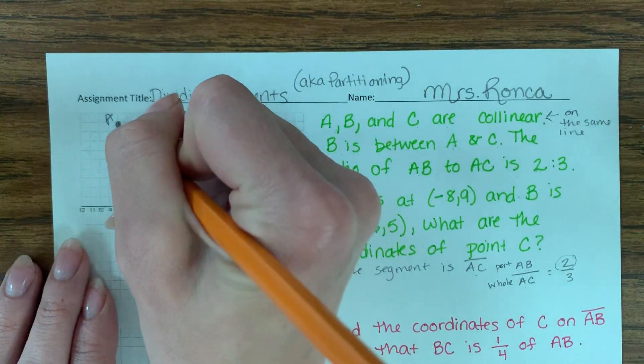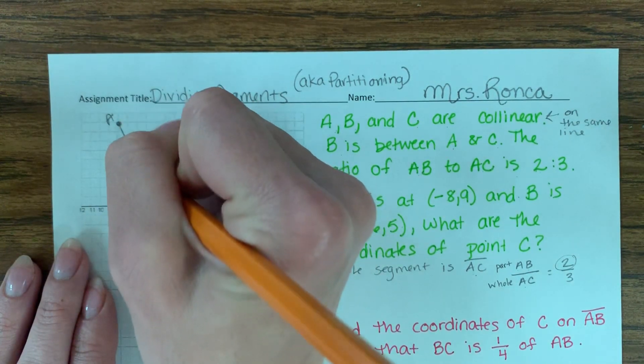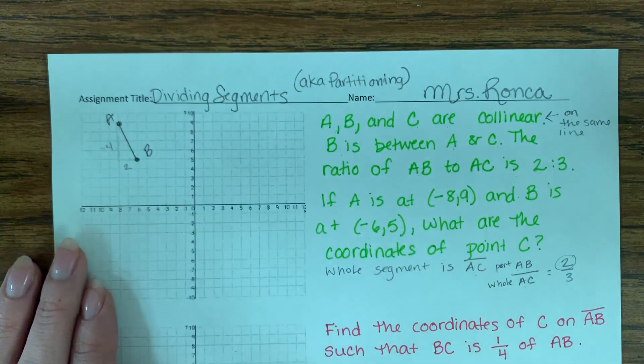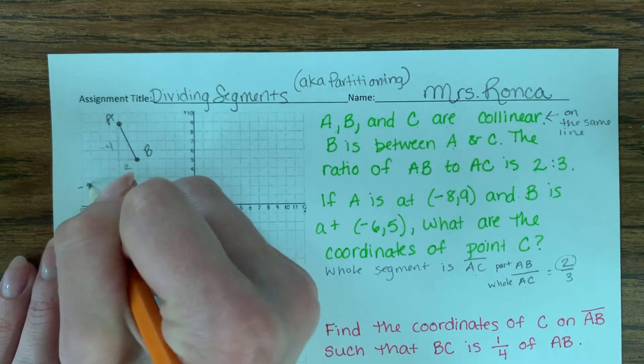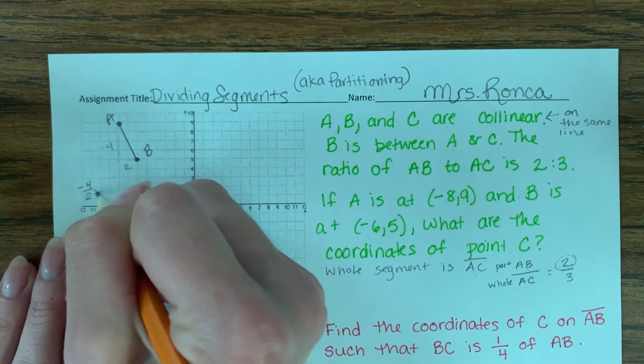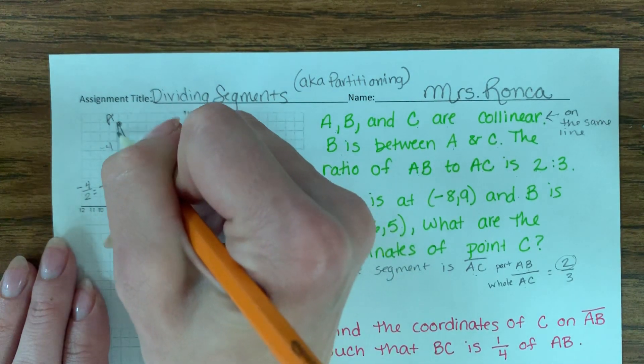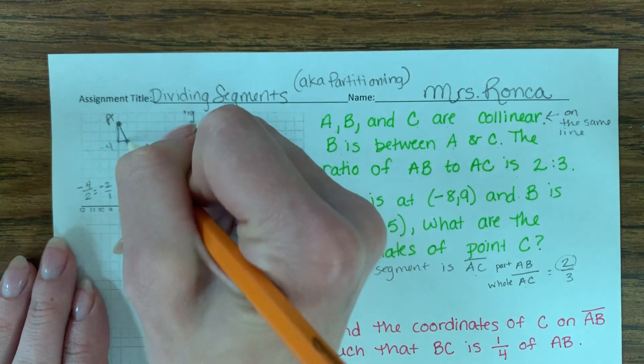I can start figuring out how to solve the rest of it. So I'm going to first figure out the slope from A to B. So if I go down 4 and I go over 2, that's a slope of negative 4 over 2, which would reduce to negative 2 over 1. So I can do